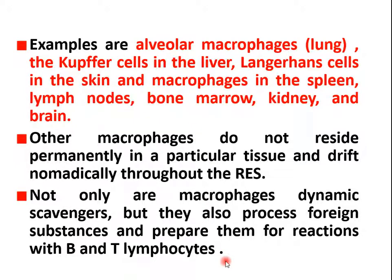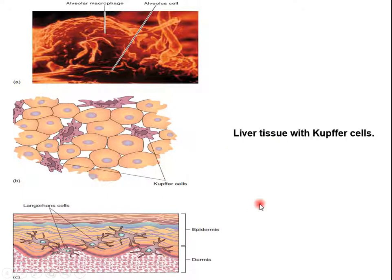Other macrophages do not reside permanently in a particular tissue. Not only do macrophages phagocytose, but they also process foreign substances and prepare them for reaction with B or T lymphocytes. An example of this is seen in liver tissue with Kupffer cells.